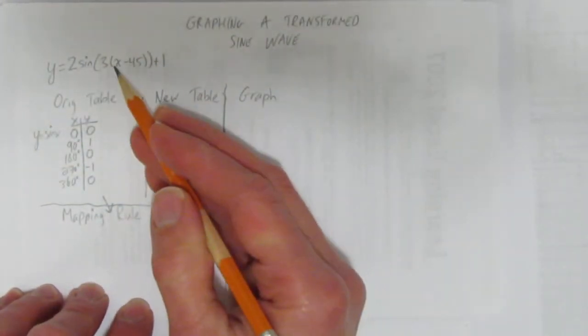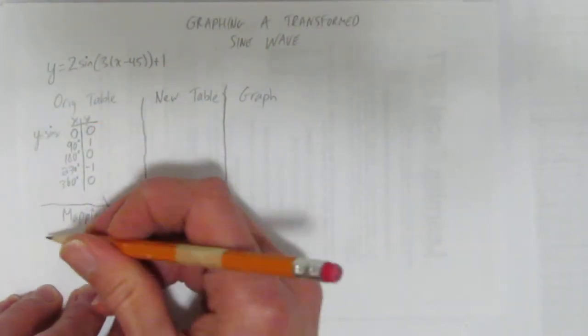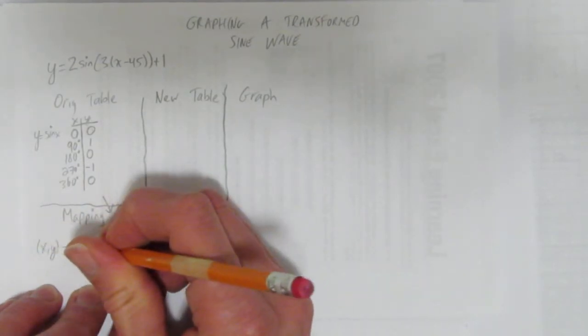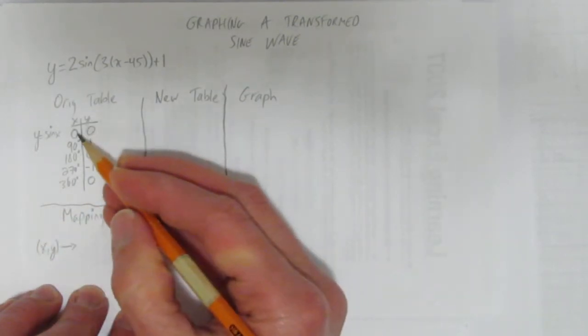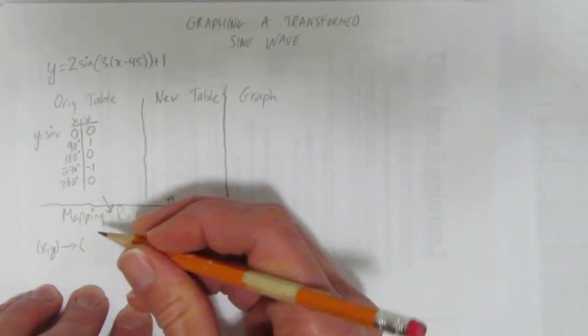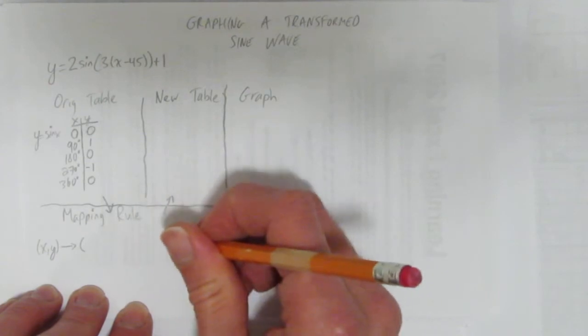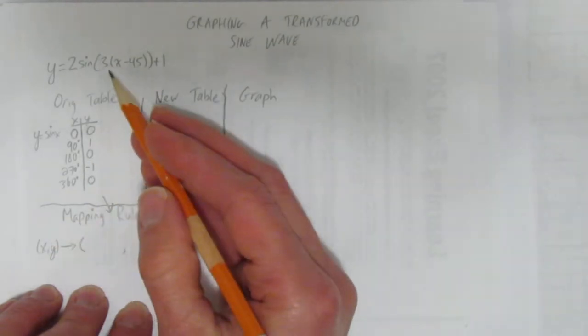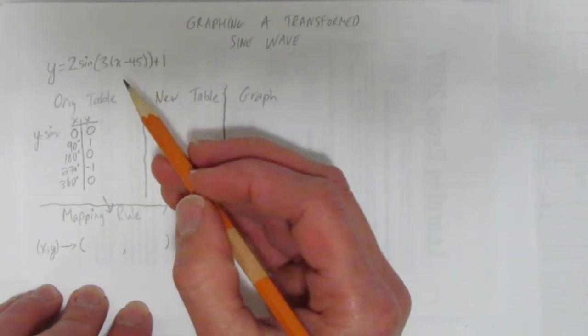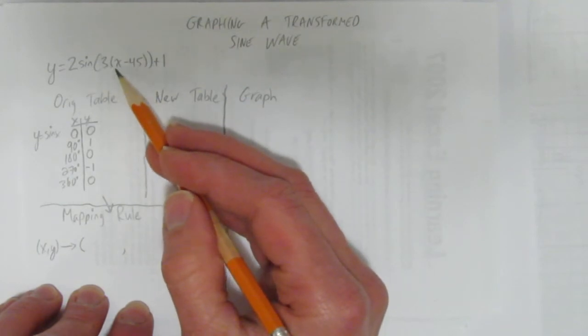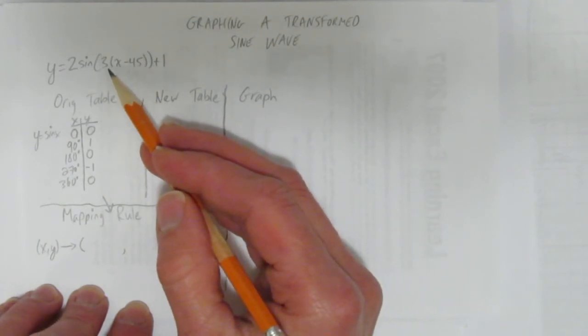Now, we're going to use our actual equation to make a mapping rule. A mapping rule is like a recipe. It takes some points, an x and a y, like all the points we've had written here, and tells us how to change them. So, first, let's look at what's happening to the x's. The x stuff is the stuff in the brackets here. And with the x stuff, you always do what's opposite of happening in the brackets. That's just the rule we're going to go by. That's the rule that always works.